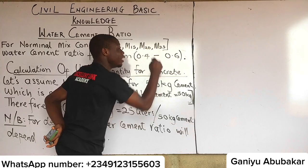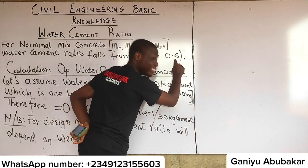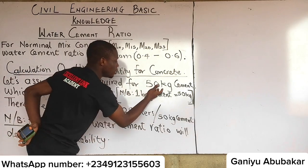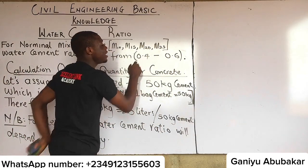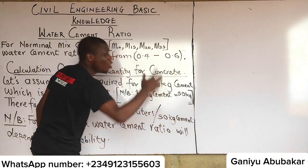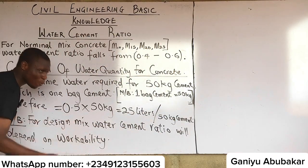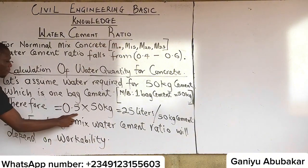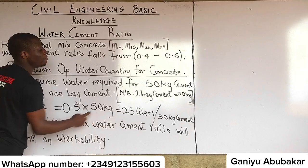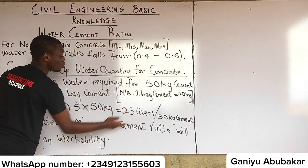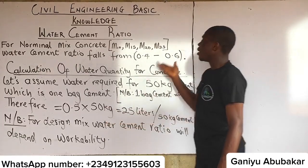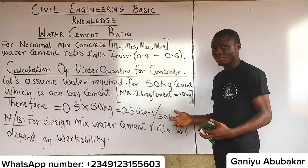If you are given any weight of cement — say 50 kg — you pick one value out of 0.4, 0.5, or 0.6 and multiply it by the weight of the cement. So with 0.5 multiplied by 50 kg, I get 25 liters as the water required to mix 50 kg of cement.